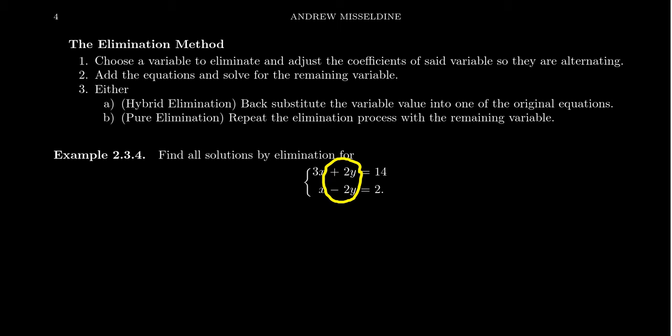Now, you might have to adjust the coefficients in order to make this work. We'll do an example of that just very shortly. But for this problem, choosing to eliminate Y is actually a great choice because once you've chosen to eliminate the variable and you adjust the coefficients, you'd simply then add together the equations and the variable you chose to eliminate will now then be gone.